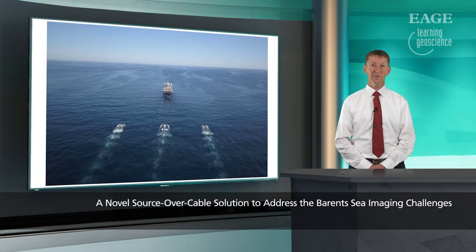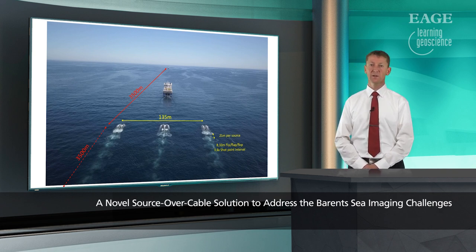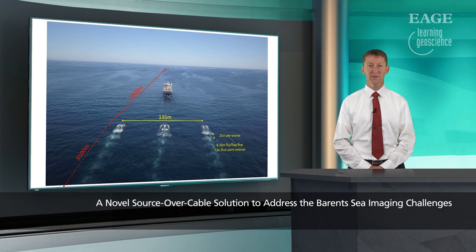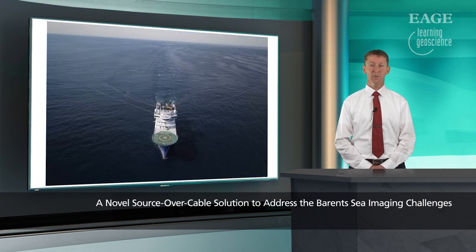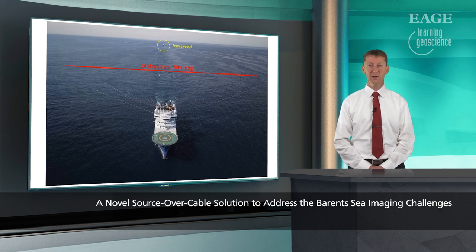Here you see an actual photograph of the source vessel with its three sources, and looking to the front you can see the streamer vessel with 10 to 12 cables underneath — below the source vessel and beneath all the sources. The sources were towed as a triple source with approximately 135 meters separation, roughly halfway down the cable, giving about three and a half kilometers of offsets on both the positive and negative sides. A drone image from the streamer vessel shows 14 cables, each seven kilometers long, with the source vessel visible approximately three and a half kilometers behind.